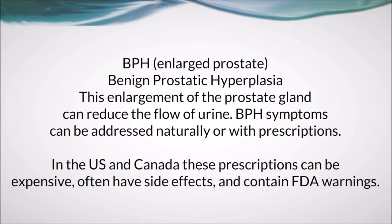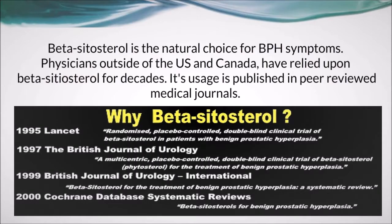BPH — benign prostatic hyperplasia — is an enlargement of the prostate gland that can reduce the flow of urine. BPH symptoms can be addressed naturally or with prescriptions. In the U.S. and Canada, these prescriptions can be expensive, often have side effects, and contain FDA warnings. Beta-sitosterol is the natural choice for BPH symptoms; physicians outside of the U.S. and Canada have relied upon it for decades. Its usage is published in peer-reviewed medical journals including The Lancet, the British Journal of Urology, and the Cochrane Database of Systematic Reviews.